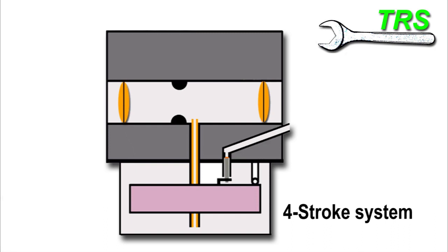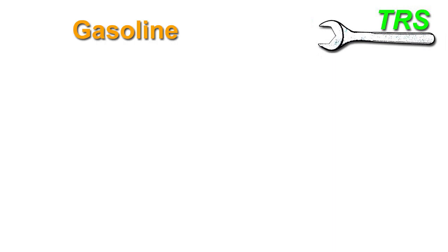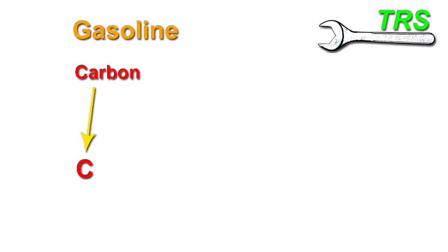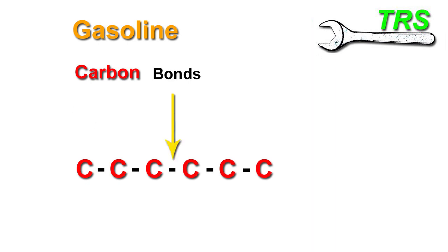In order to explain how carburetors achieve this processing on fuel, I'll have to explain some very basics on gasoline fuel chemistry — in other words, what it's made of. There are many additives within gasoline, but in its simplest form, each molecule has carbon atoms linked together by special bonds, very much like this.